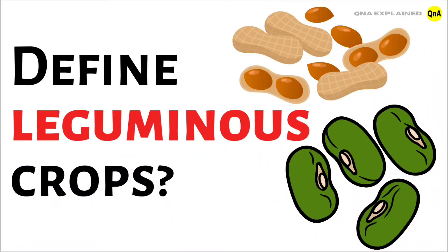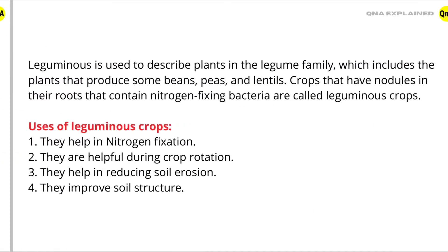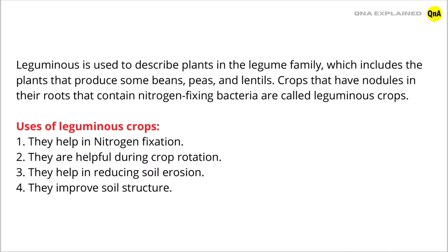Define Leguminous Crops. Leguminous is used to describe plants in the legume family, which includes plants that produce some beans, peas, and lentils.